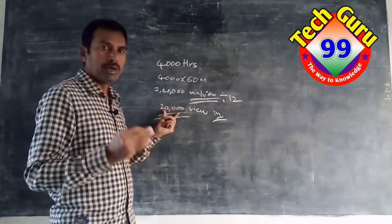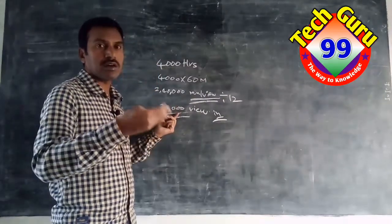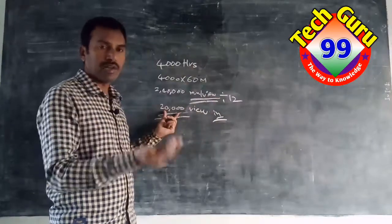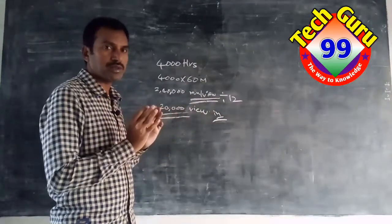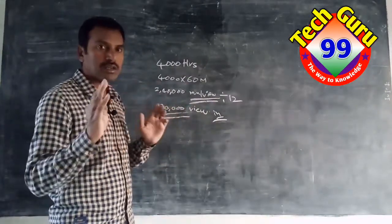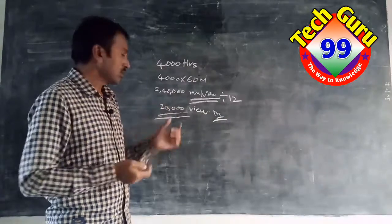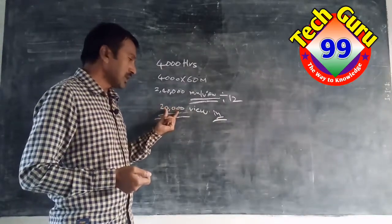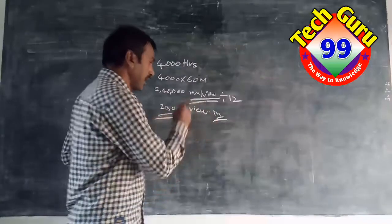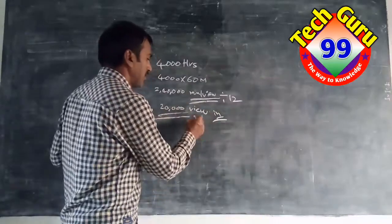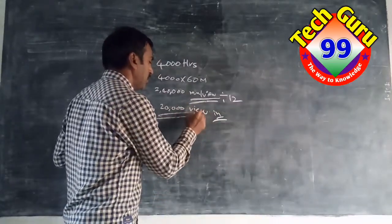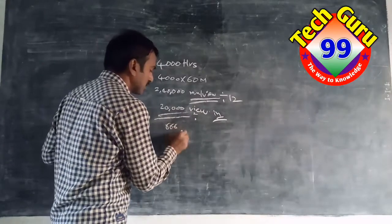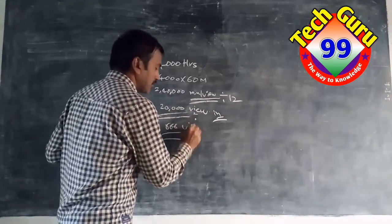This is the target. If you have a target, you can reach the target. So this is the target per month. For example, the average day — if you have a target, you can't reach the target, it also affects 666 views daily.